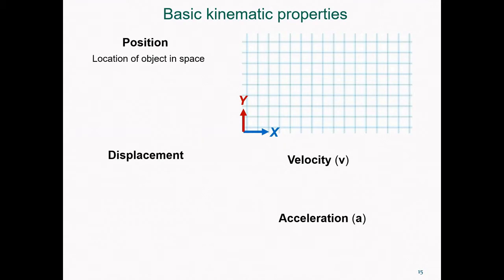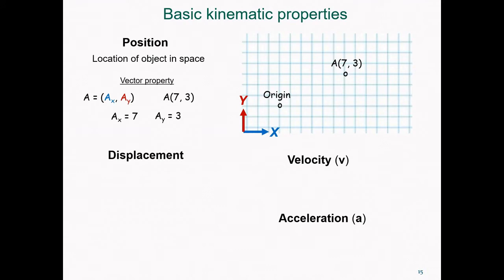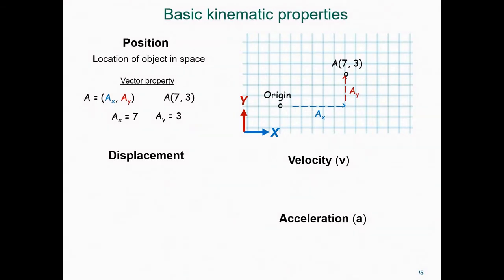Here we see a particular reference system. We can define the axes x and y, and we can define an origin within this space, and a position of a point within this space. Position is a vector property, in that it characterizes both a magnitude and a direction in space. We can define a position with vector coordinates. Here we define the position of point A using coordinates Ax and Ay. Ax gives us the direction and magnitude that we need to move in the x-axis, and Ay does the same for the y-axis.